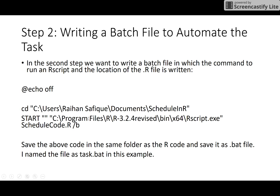The main part of the batch file tells Windows: go to this folder, start the Rscript.exe program, and run this code using that program. That's what it's telling the Windows Task Scheduler. It's a very simple two or three line code that you write in Notepad and save as a .BAT file in a specified folder — remember where you save it.